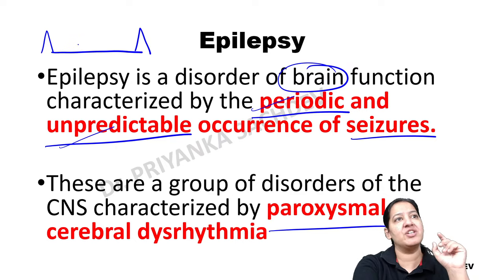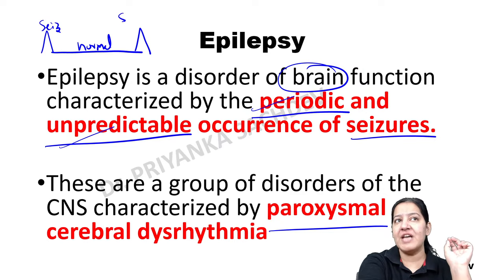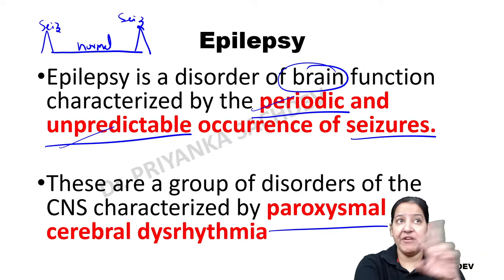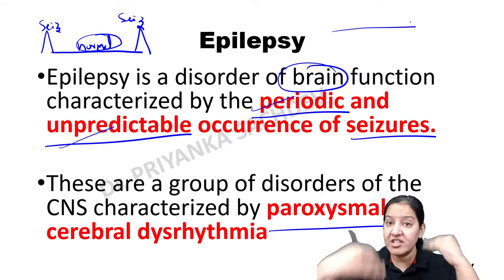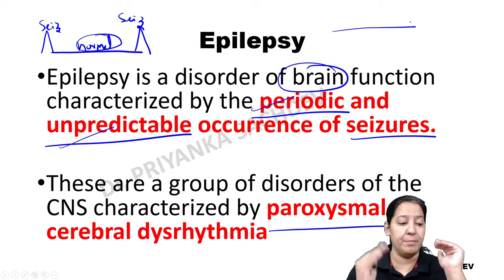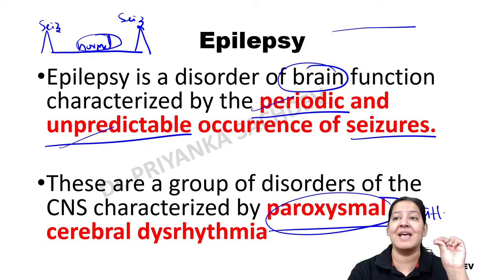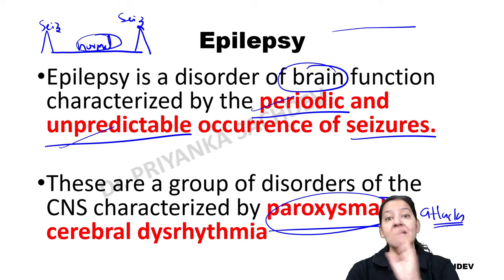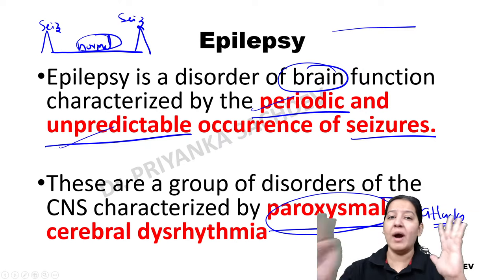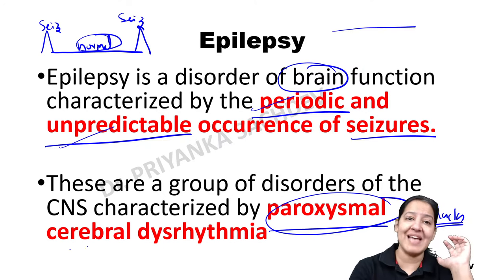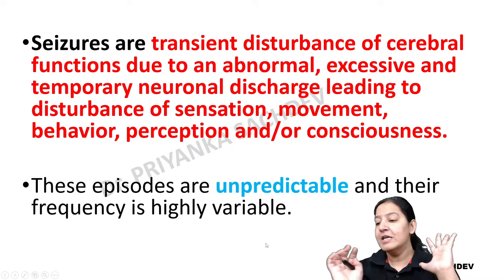It is not continuous. There is an attack of epilepsy and between two attacks the patient is absolutely normal — like asthma, it comes in attacks. At the time of the attack, patient has seizures, but between two attacks the patient is absolutely normal. Such a disorder is known as paroxysmal — meaning attacks. It is a paroxysmal cerebral dysarrhythmia.